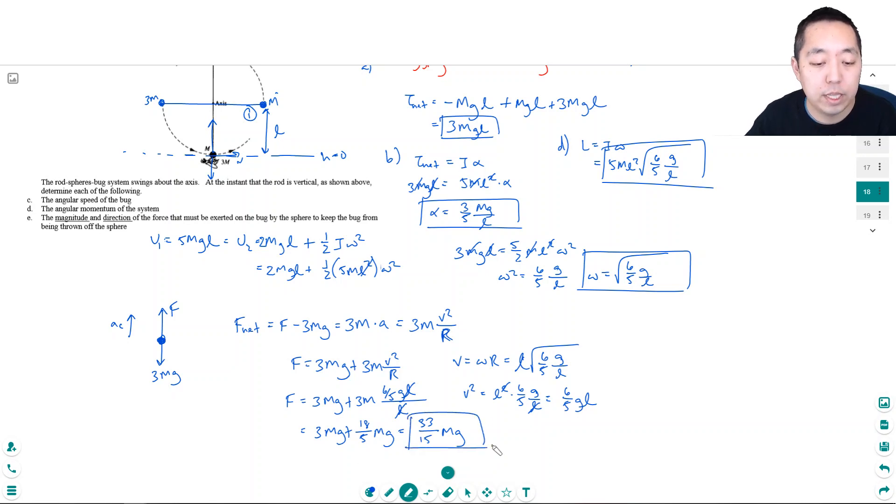And that's the force, and it'll have to be upward to keep him on the circular path. If it's not enough force, then the bug is not going to stay on that circular path—it's going to fly off. Hope you found that helpful.